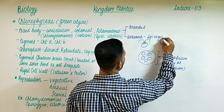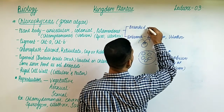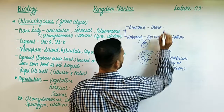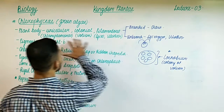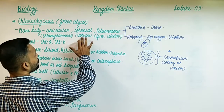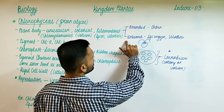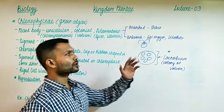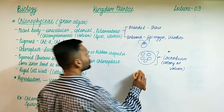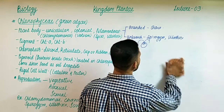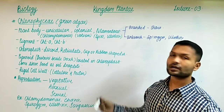Spirogyra and Ulothrix are filamentous unbranched examples, and in the branched category we have Chara. So for MCQs: unicellular - Chlamydomonas; colonial - Volvox; filamentous unbranched - Spirogyra/Ulothrix; filamentous branched - Chara.